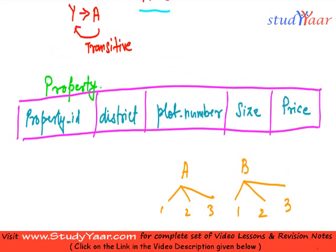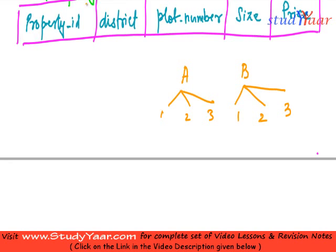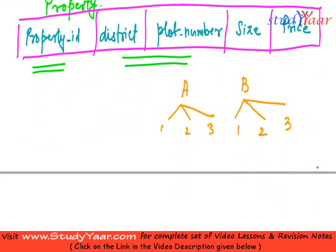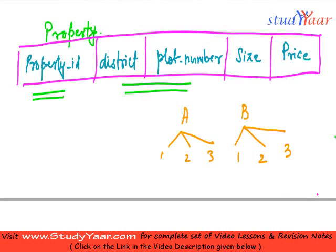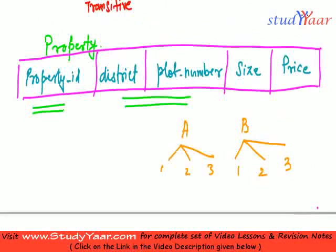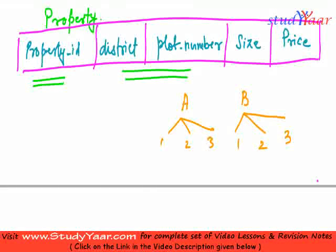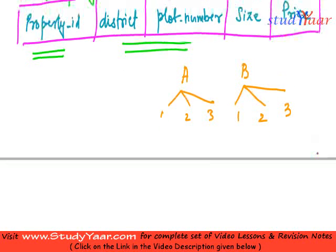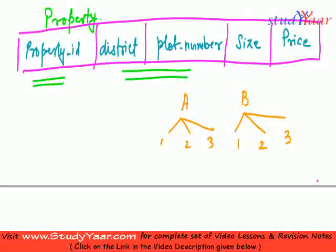So here I have two candidate keys. My candidate keys are a district plot number combination and just a property ID. Every property is having a different property ID, but we might have two same plot numbers across two different districts. So let me now jot down what are the functional dependencies over here.